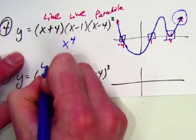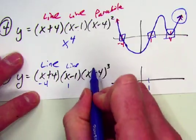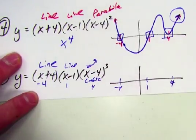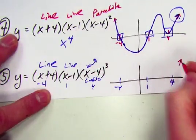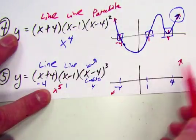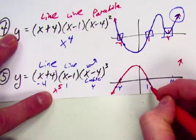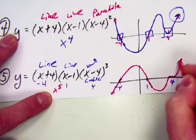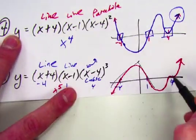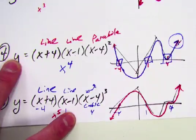Let's try one more. This one has a line through negative 4, a line through 1, and a cubic at 4. The last arrow is up because the coefficient is positive. Counting the powers: 1 + 1 + 3 = 5, which is odd, so the first arrow is down — opposite direction. The graph starts down, lines through negative 4, bounces up, lines through 1, then S-curves (cubics) right at 4, and heads up. That gives 5 directions, equal to the degree.